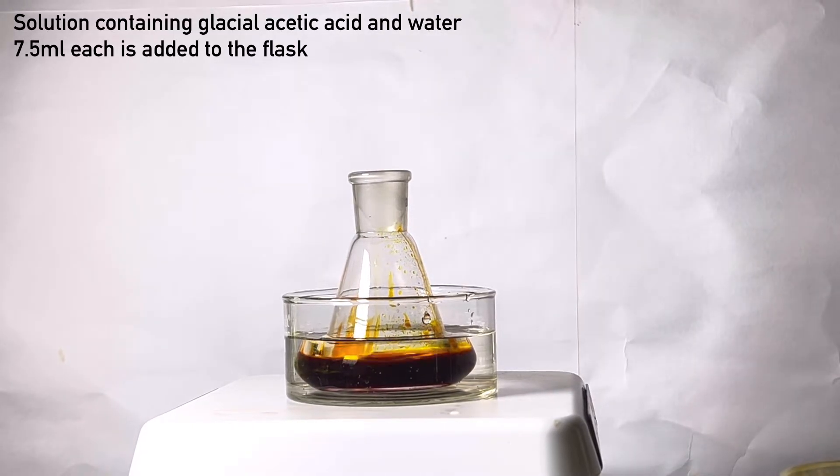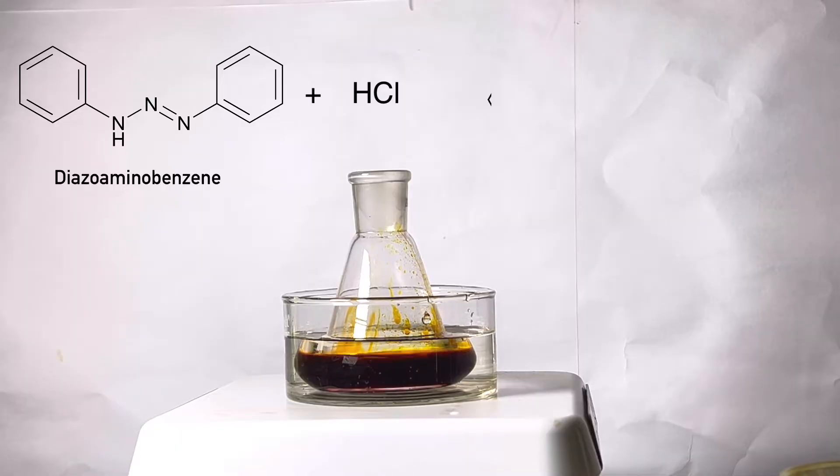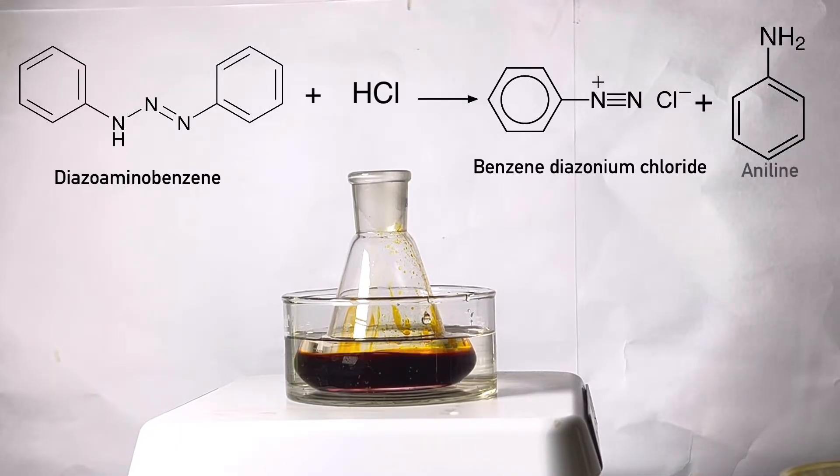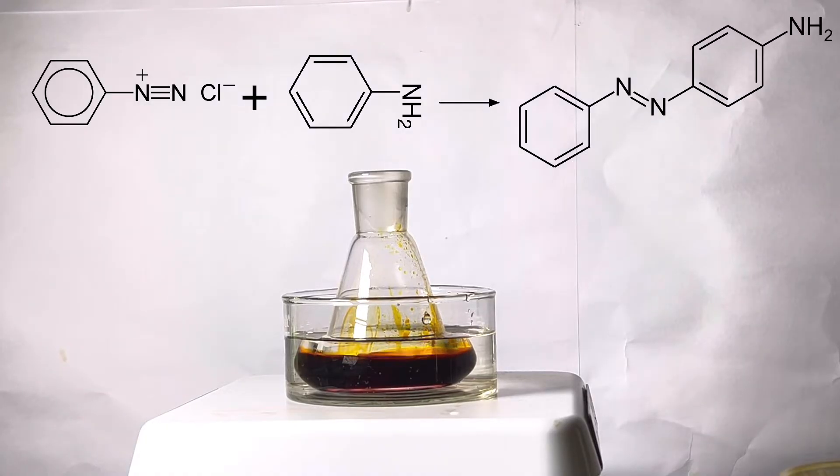Now, let us see what is happening here. Here we see diazoaminobenzene rearrangement. First, the diazoaminobenzene dissociates to benzene diazonium chloride and aniline. This would only take place if there is an equilibrium involving the diazoaminobenzene compound, acid, and phenyl diazonium chloride. Then, the coupling between the phenyl diazonium ion and the para-position of the aniline takes place under weakly acidic conditions.